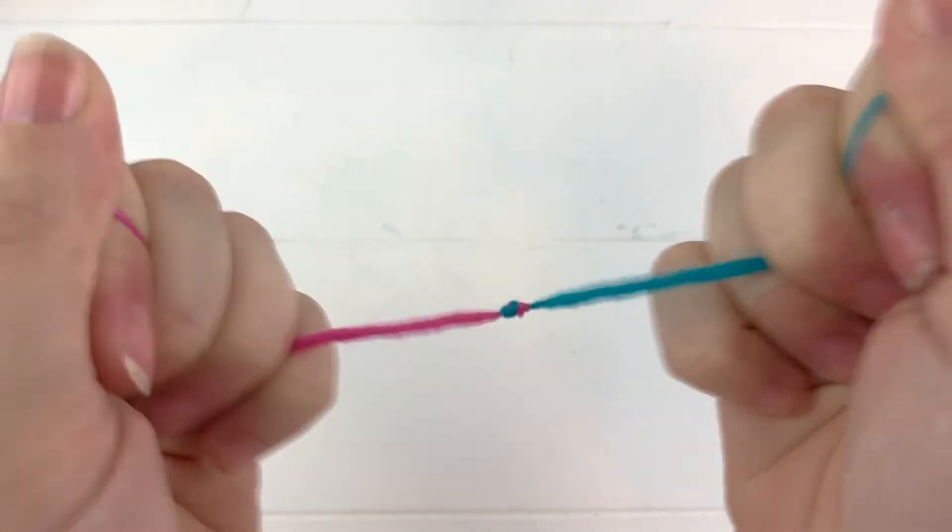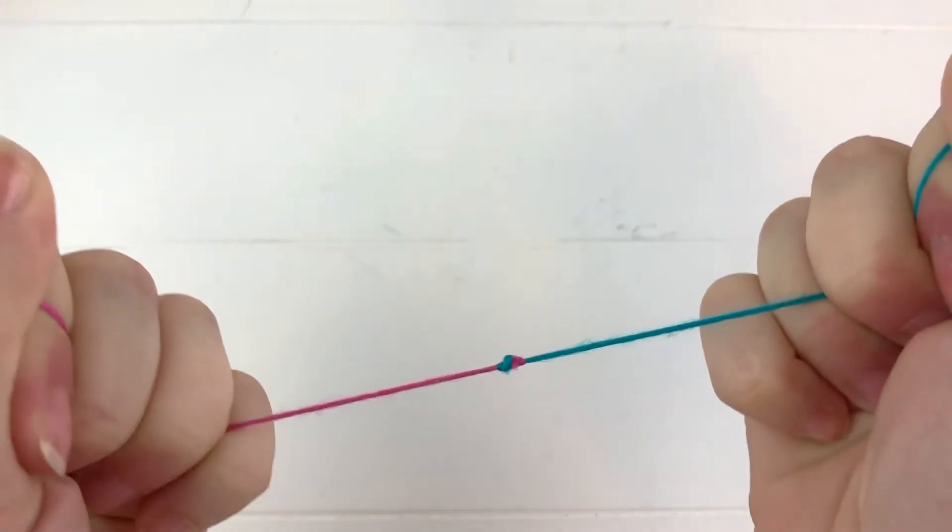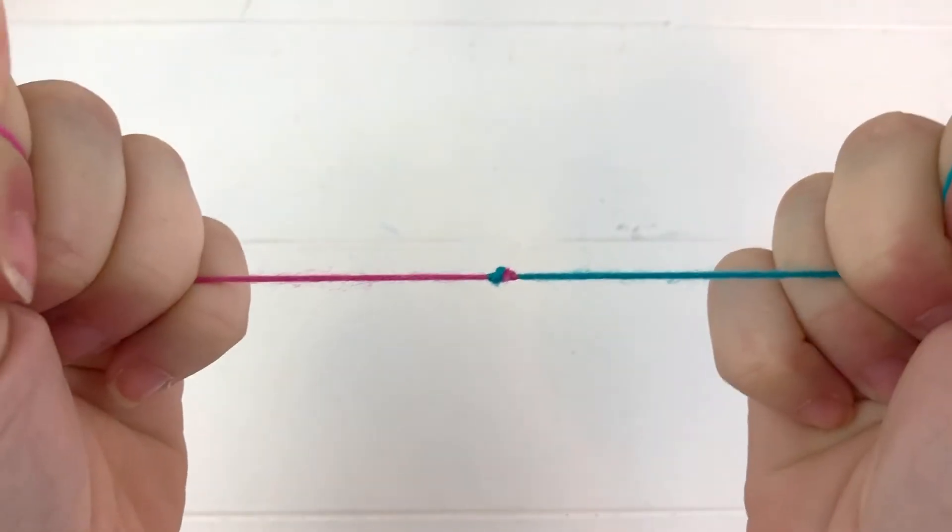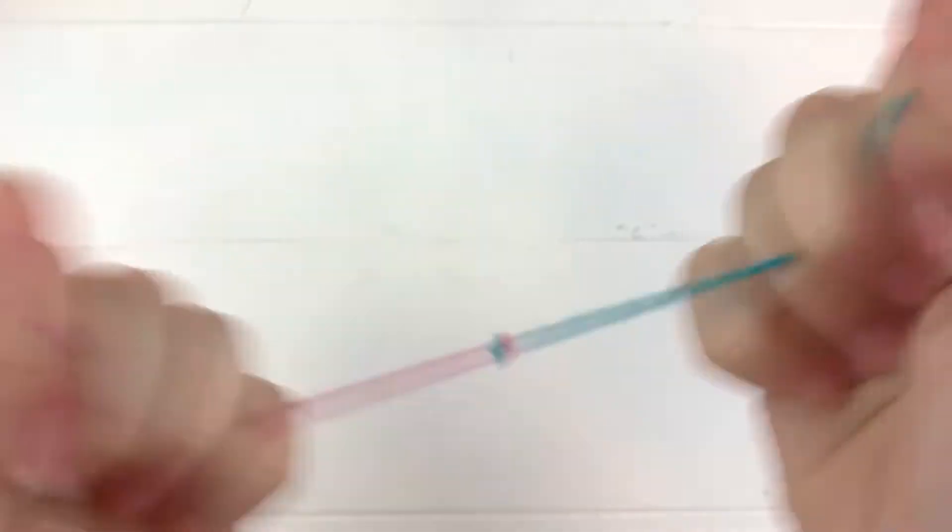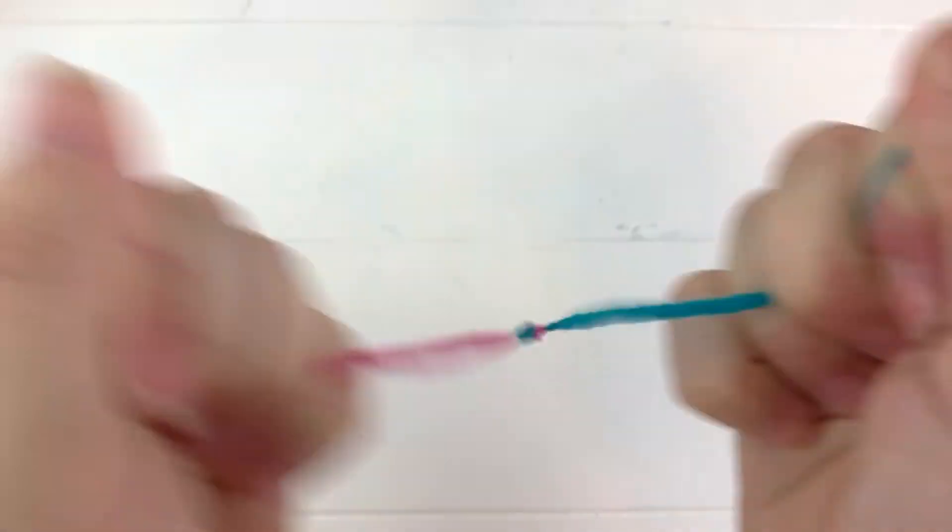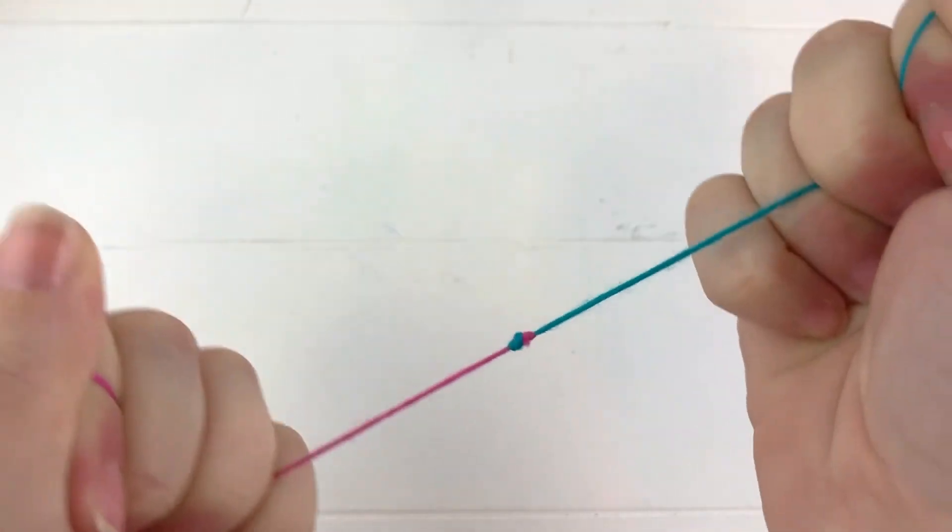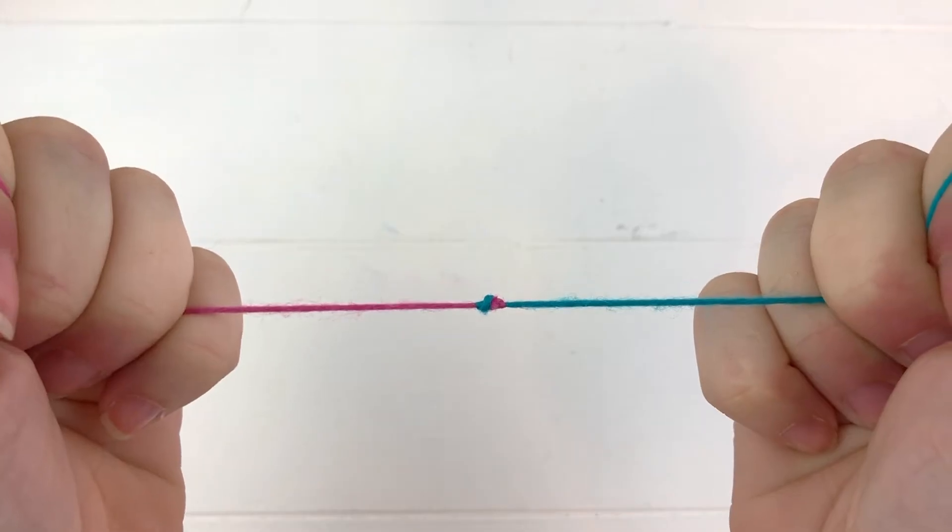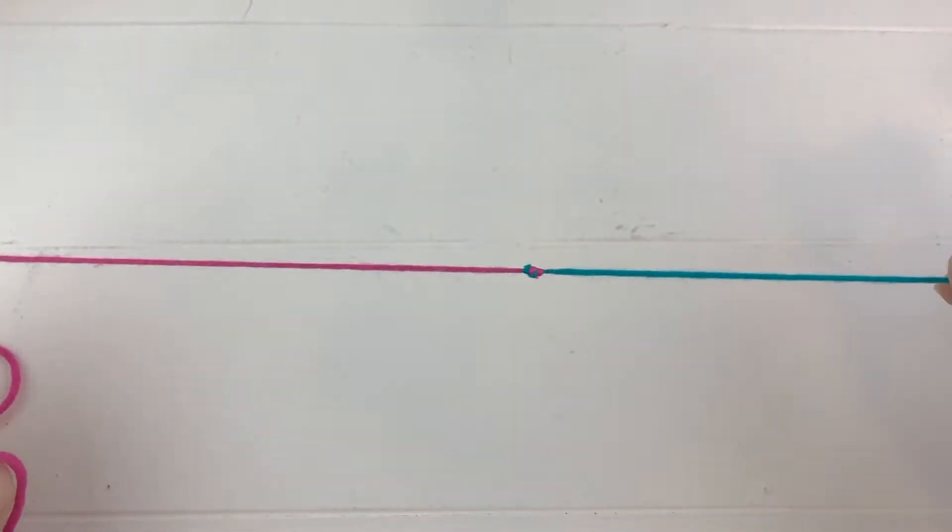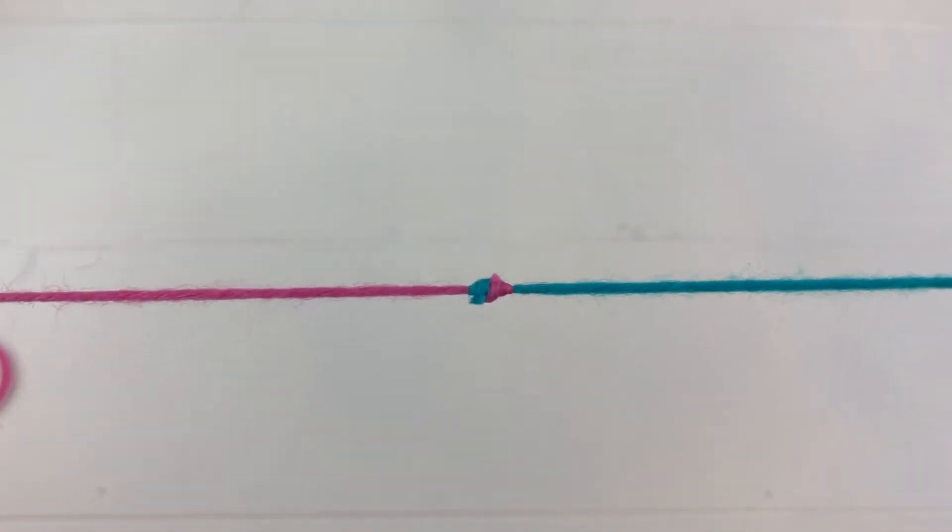The reason I've nicknamed this the unbreakable knot is because both April and my husband have attempted to break this knot, and what happened was the yarn snapped before the knot broke. But it's very important to do the knot correctly, otherwise it will come apart immediately.